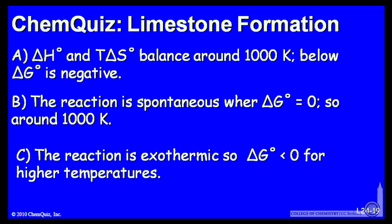Let's look at a possible explanation for every answer. Remember, A: delta H and T delta S balance around 1,000 K. So below 1,000, delta G is negative.